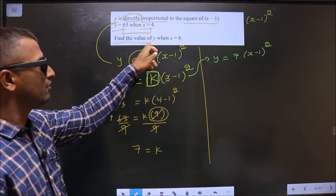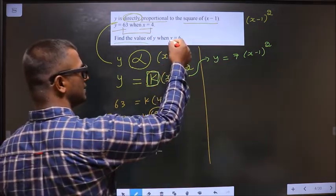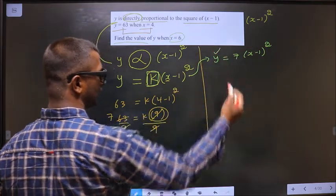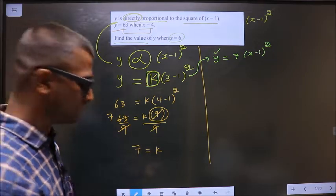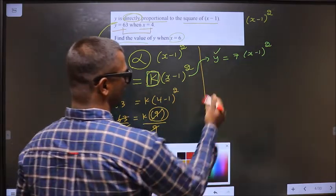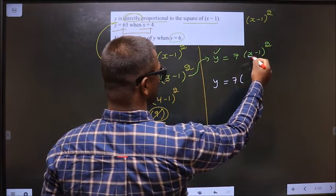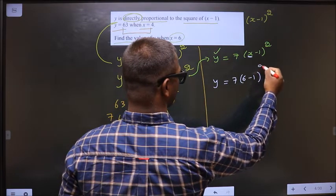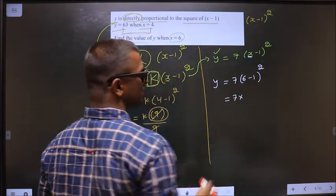Find the value of y when x equals 6. Now replace x equals 6 in this equation. You will get the value of y. So y equals 7 brackets, in place of x, 6.